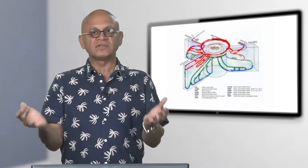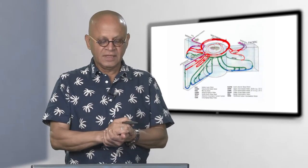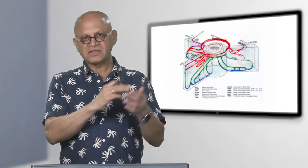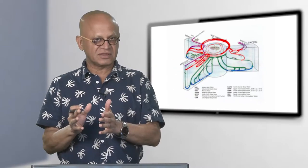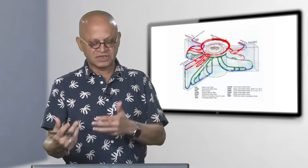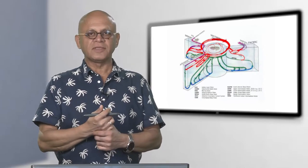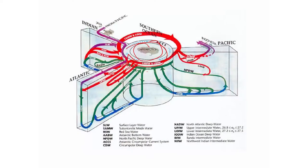The other piece needed to understand the difference between northern hemisphere glaciers and Antarctica is the thermohaline circulation. This diagram shows the three oceans — Atlantic, Pacific, and Indian — with Antarctica in the middle. There is deep water forming in the Greenland, Iceland, and Norwegian seas. That water sinks pretty deep to the bottom and then, being lighter than Antarctic bottom water, begins to go up as it moves south in the Atlantic Ocean.